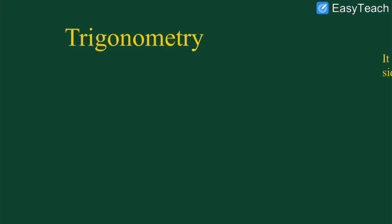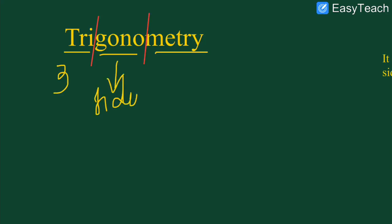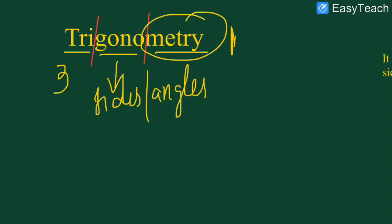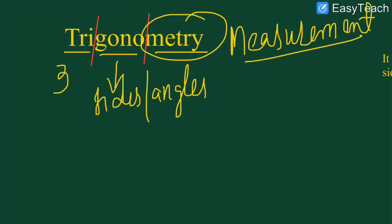Jab hum trigonometry ki baat karte hai, it is actually the combination of three Greek words: number one, tri; number two, gono; number three, metri. Tri means three, gono means sides or angles, and metri means measurement. So what actually trigonometry is — it is that branch of mathematics which deals with the measurement of three sides or three angles of a triangle.